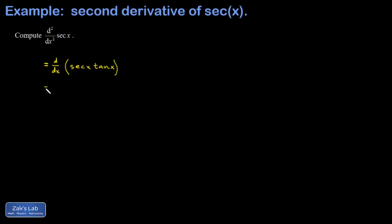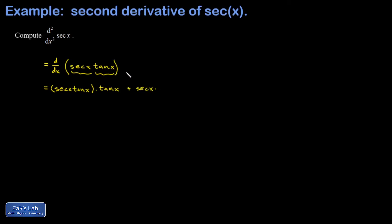When I compute the second derivative, I have to apply the product rule to this. Differentiating the first function gives me, again, secant tangent, and this tangent was a spectator in that first term. I add to that a second term where the secant function is left alone and the tangent function is differentiated, giving me secant squared x.